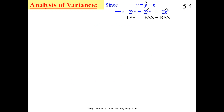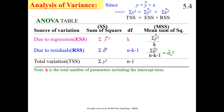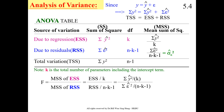Here is the analysis of variance table. We have the total sum of squares, the explained sum of squares, and the residual sum of squares. The table shows regression sum of squares, residual sum of squares, and total sum of squares, along with their degrees of freedom and mean sum of squares — the mean sum of squares due to regression and the mean sum of squares due to residual.